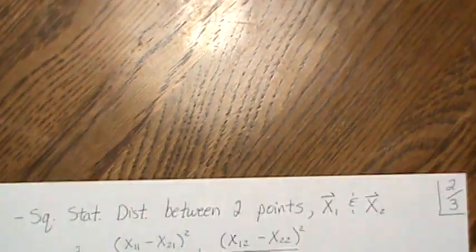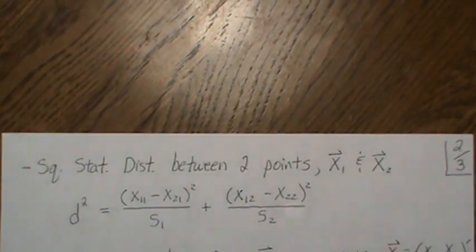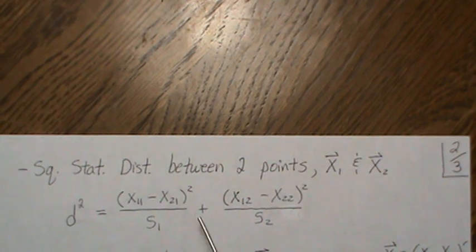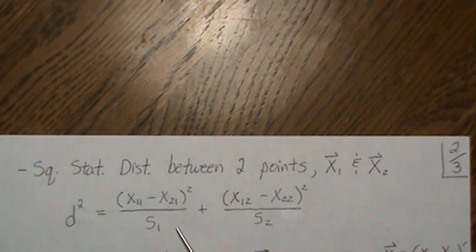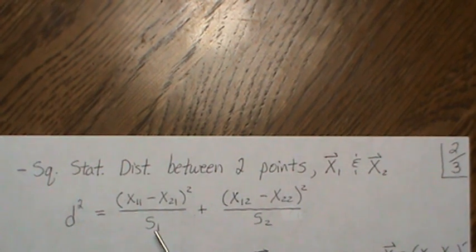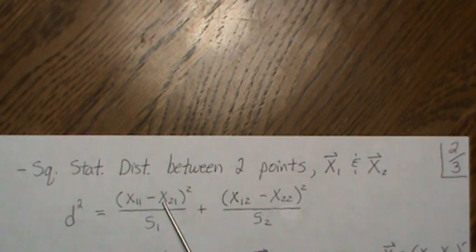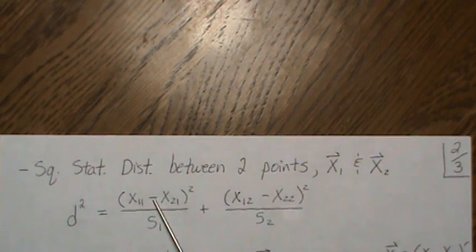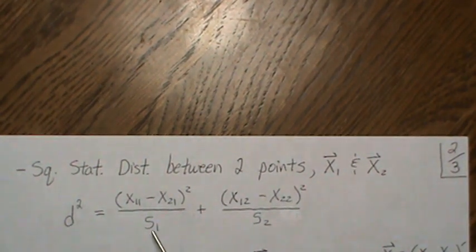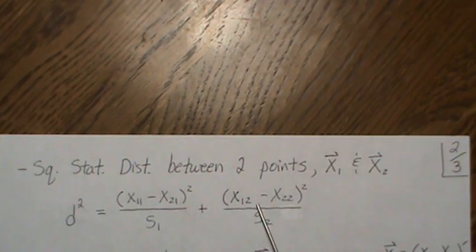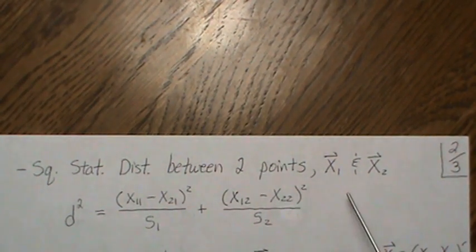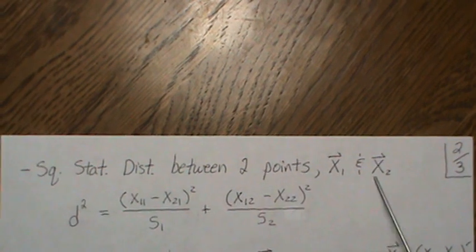Now, the same way works if we wanted to find the statistical distance between two points. What we do is we standardize them, or scale them, I should say, by their standard deviation. So we take the difference in the first component, squared, divided by the standard deviation associated with that first component, and then we do the same thing for the second component. And this is the statistical distance between any two points.